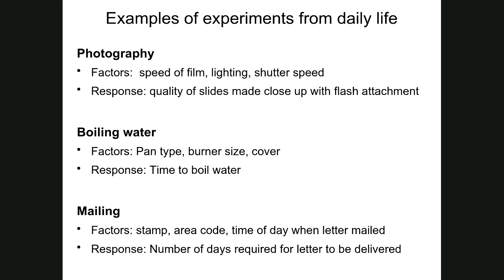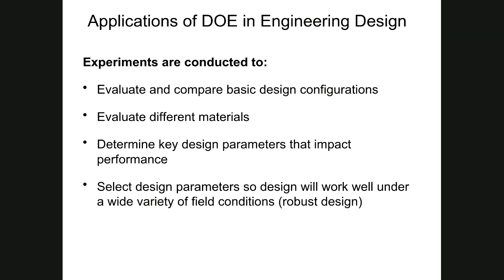In the engineering space there are a significant number of DOE applications. These include evaluating and comparing basic design configurations, looking at response variables, and evaluating different materials under different conditions. DOE is also used for determining key design parameters that will impact performance of a new product or service — selecting design parameters so the design works well under a wide variety of field conditions or environments. This is called robust design. For example, if a product is sold into multiple markets ranging from equatorial to polar climates, we need it to work at various temperatures, humidity levels, frost, and intense sunlight.